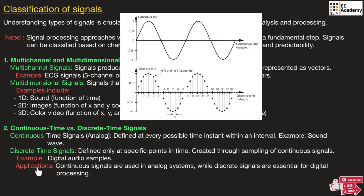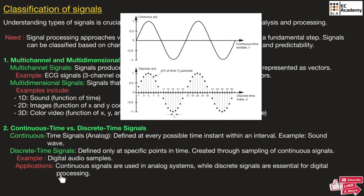Continuous signals are used in analog systems, while discrete signals are essential for digital processing. For digital signal processing, discrete time signals are very much important.